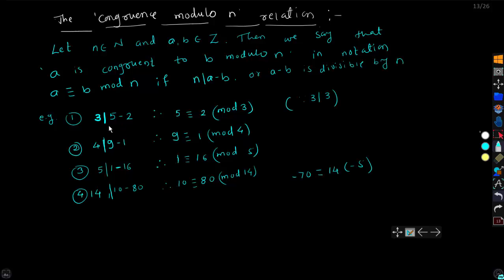Let us see some examples based on congruence modulo n. Take n = 3: since 5 minus 2 is 3, and 3 divides 3, we have 5 ≡ 2 (mod 3). Next, 9 minus 1 is 8, and 4 divides 8, so 9 ≡ 1 (mod 4).